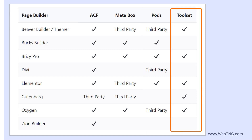A lot of the builders have support for Toolset — Beaver Builder, Brizipro, Elementor, and Oxygen currently support it. And of course, Toolset has their own blocks add-on for Gutenberg support. However, while the table shows that a lot of page builders support Toolset, Toolset itself is encouraging its users to use Gutenberg, so I'm not sure I would count on this page builder support long term.